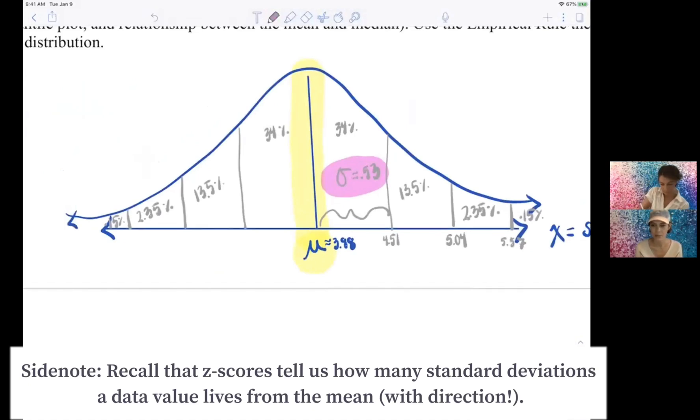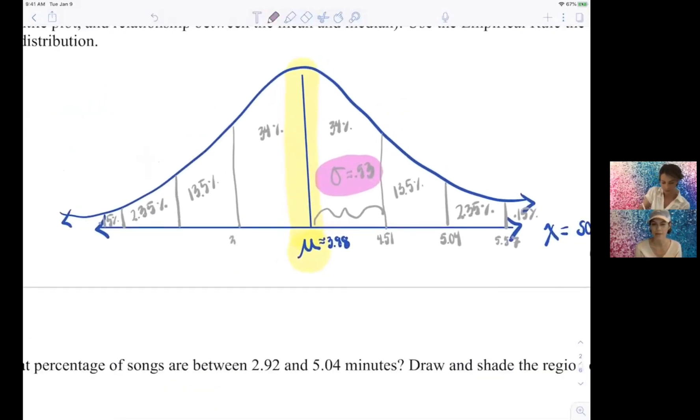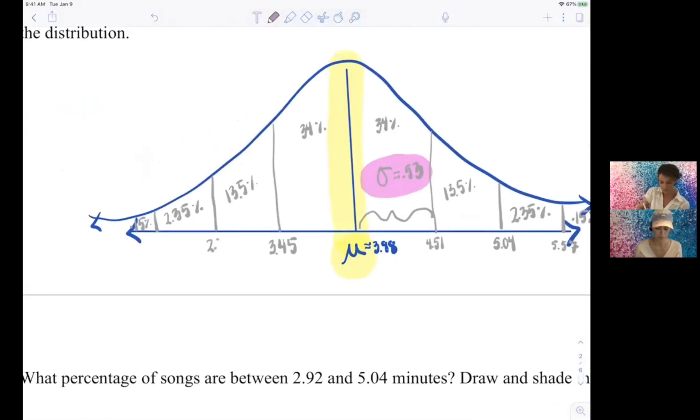So 3.98 minus 0.53 is 3.45, right. And then 2.92, and then 2.39.